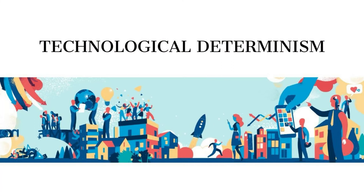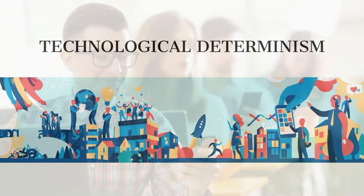This is where we arrive at the first theory, which is technological determinism, or the belief that technology is the governing force in society. According to this theory, social progress follows an inevitable course that is driven by technological innovation.